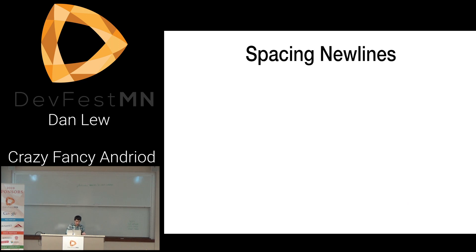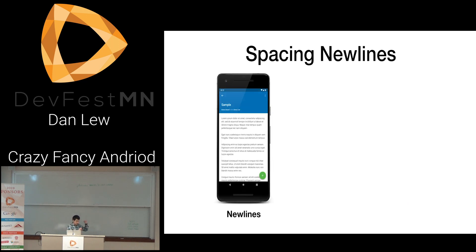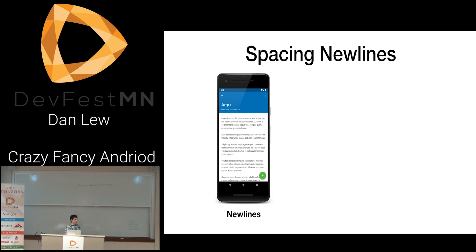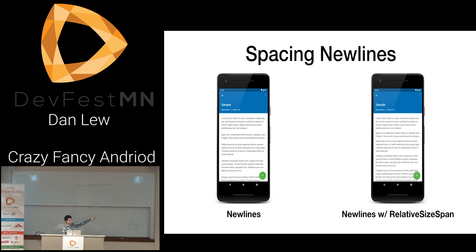Spacing new lines — a cool little trick. The default paragraph spacing sucks on Android. A double new line looks way too large, essentially the entire height of a line of text. The trick is to just use new lines but apply a RelativeSizeSpan to make them smaller — like half the height. Suddenly your paragraphs look a lot better.